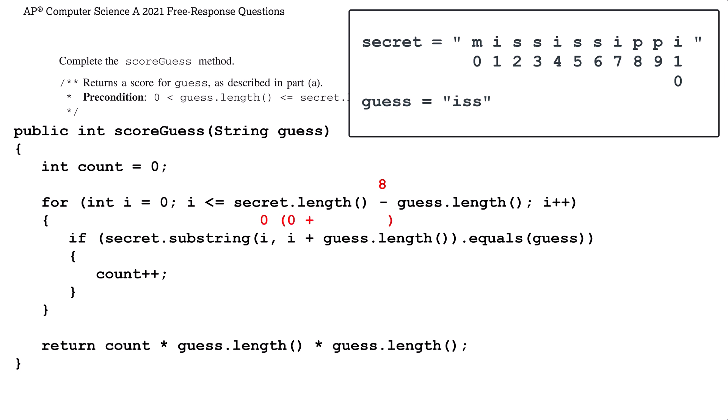We punch in 0 for i, then we punch in 3 for guess.length. For this iteration, our substring starts at 0 and includes indexes 0, 1, and 2. MIS gets compared to ISS, which in this case is false. By checking the extremes, we can see that this loop will correctly traverse the secret instance variable and compare each section to guess.